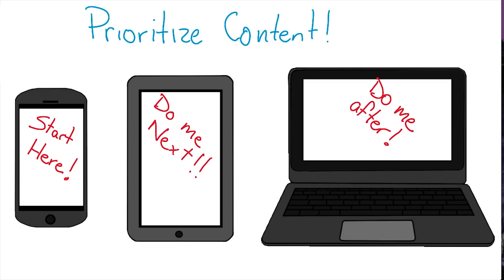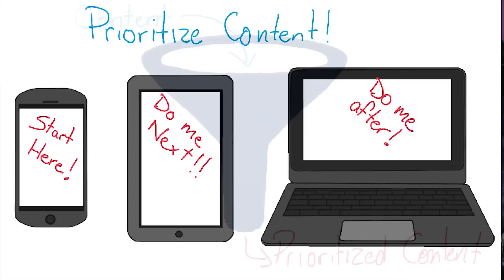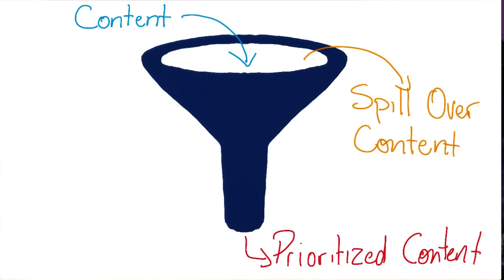By starting small, I really have to prioritize what's important for my users — what's the most important thing that they want to do or that they're going to see on screen? When starting big and then designing down, it can be too easy to just cut or hide content that may be important.